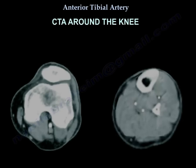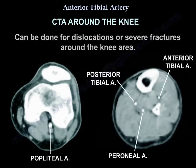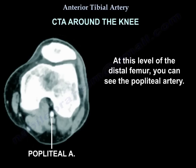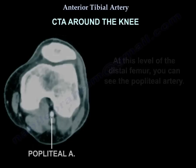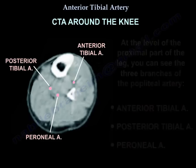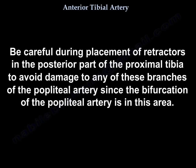Another area of interest is CTA around the knee, which can be done for dislocations or severe fractures around the knee. At the level of the distal femur you can see the popliteal artery, and in the proximal part of the leg you can see the three branches: the anterior tibial artery, the posterior tibial artery, and the peroneal artery. One must be careful during placement of retractors in the posterior part of the proximal tibia to avoid damaging any of these branches, since the bifurcation of the popliteal artery is in this area.